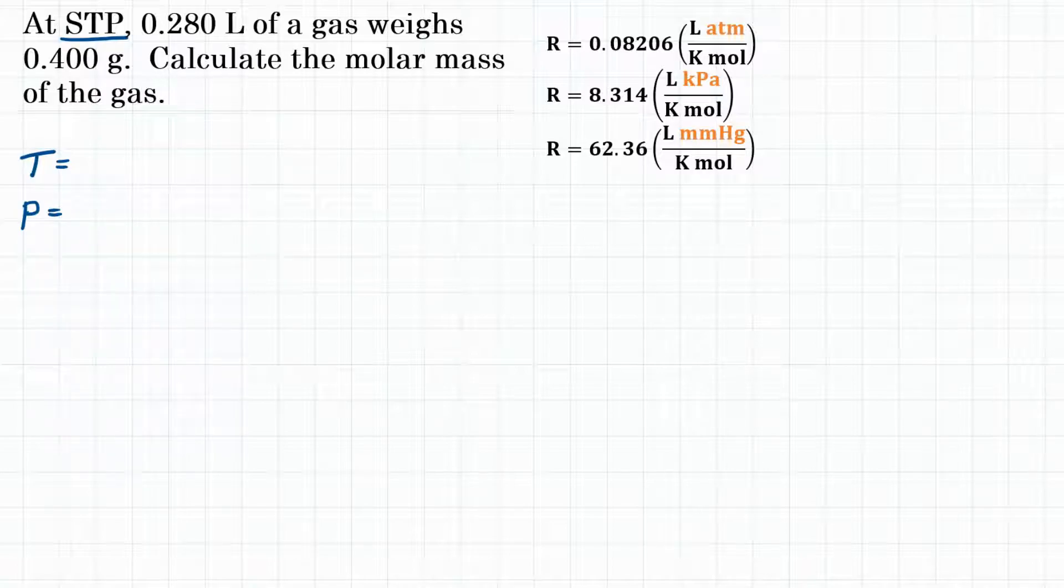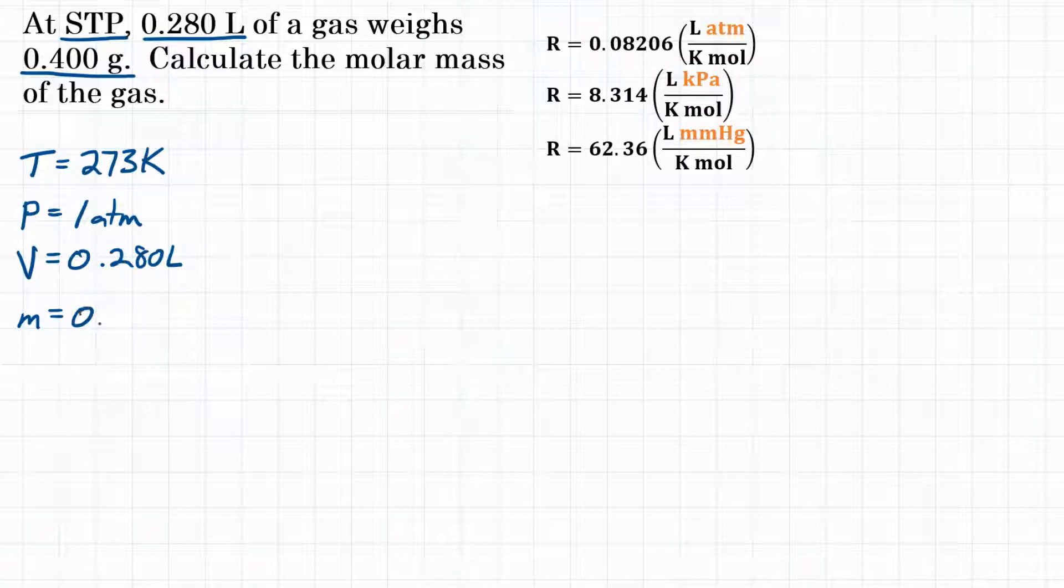For temperature, that would be 273 Kelvin. For pressure, 1 atmosphere. We have 0.280 liters of gas, so volume equals 0.280 liters. And we have a mass of 0.400 grams.